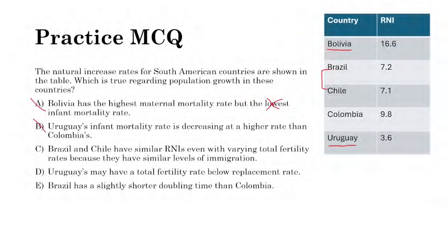Answer C — Brazil and Chile have similar RNIs with varying total fertility rates because they have similar levels of immigration — is wrong because RNI only includes birth and death rates, not immigration. Answer E — Brazil has a slightly shorter doubling time than Colombia — is also wrong because Brazil has a lower RNI than Colombia, meaning Brazil's doubling time would be longer. Therefore, D is the correct answer: Uruguay may have a total fertility rate below the replacement rate, which is possible given its low RNI. You don't need a negative RNI to be in population decline.